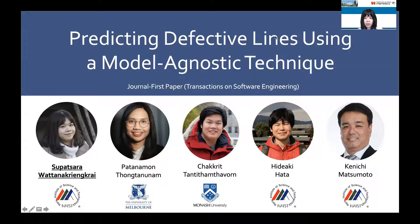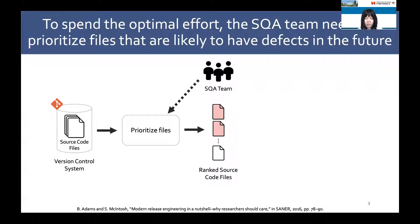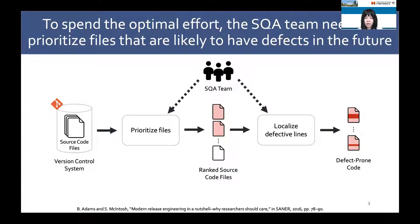Next, I will talk about the motivation of our paper. Software quality assurance, or SQA, is one of the software engineering practices for ensuring the quality of a software product. When changes will be merged into the release branch, an SQA team needs to carefully identify defects in those changes. However, due to limited SQA resources, it is not feasible to examine the entire codebase. Hence, to spend optimal effort on SQA activity, an SQA team needs to prioritize files that are likely to have defects in the future, and then identify defects in those defect-prone files.